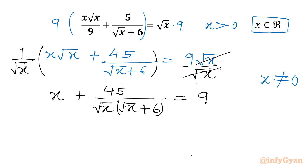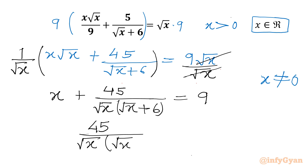Take away x from both sides. So 45 divided by √x times (√x plus 6) equals 9 minus x.